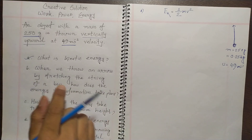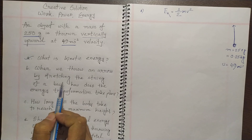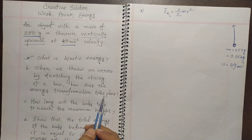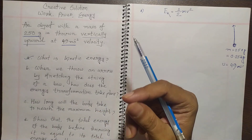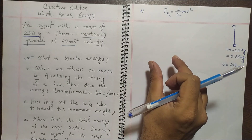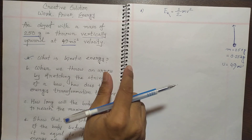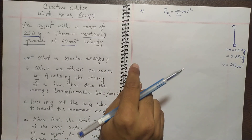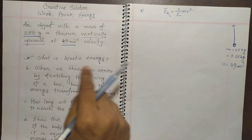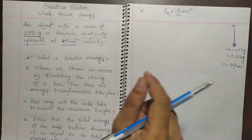Question B: when we throw an arrow by stretching the string of a bow, how does energy transformation take place? While pulling the string, potential energy accumulates in the string due to its position change. Then while shooting the arrow, that potential energy converts to kinetic energy in the bow.